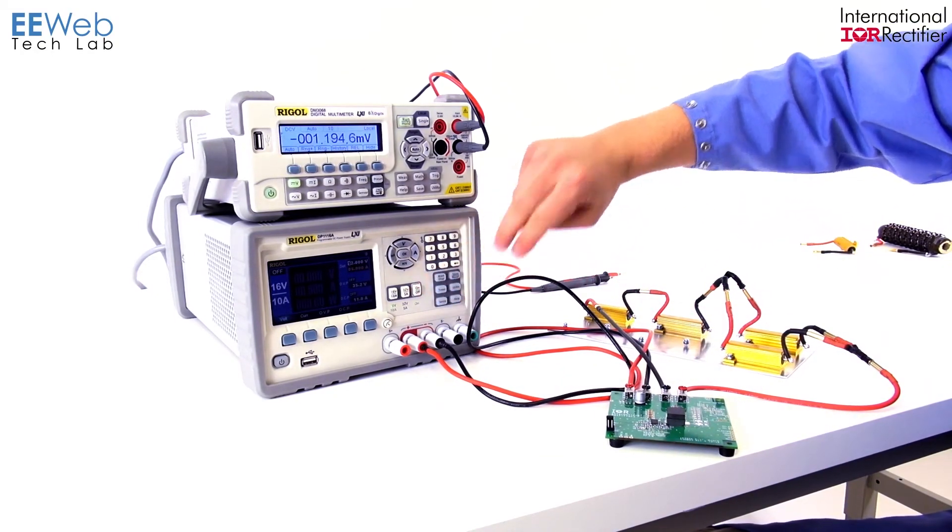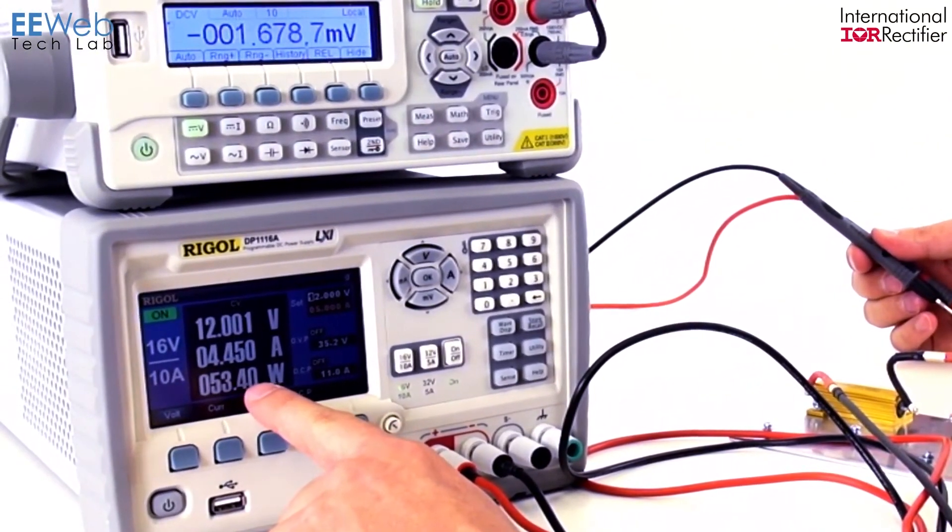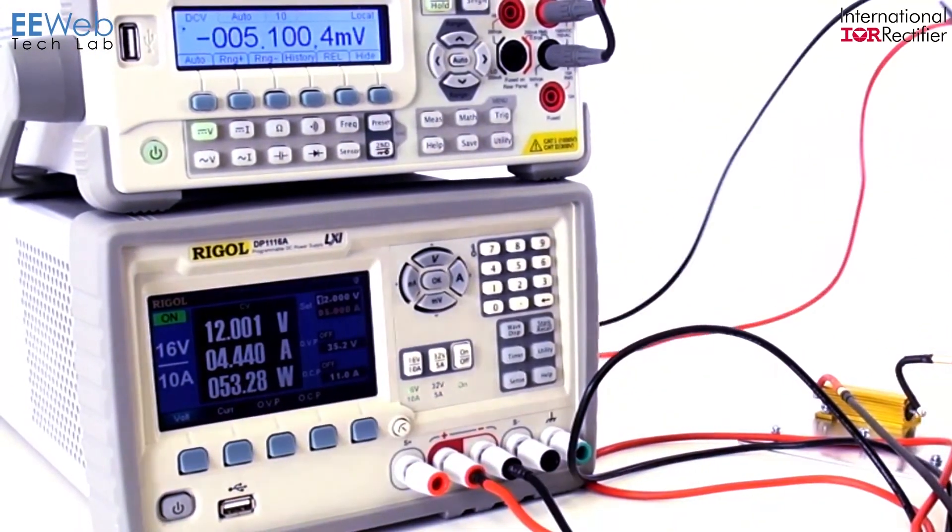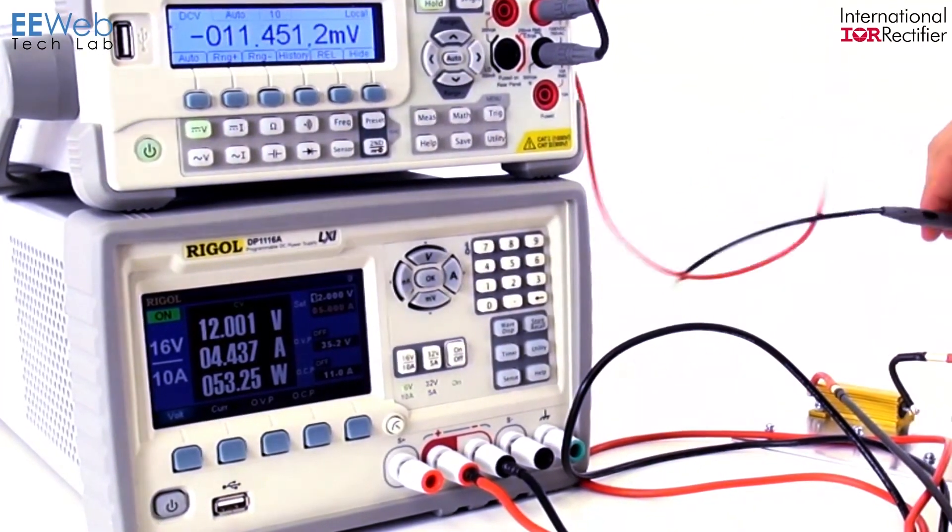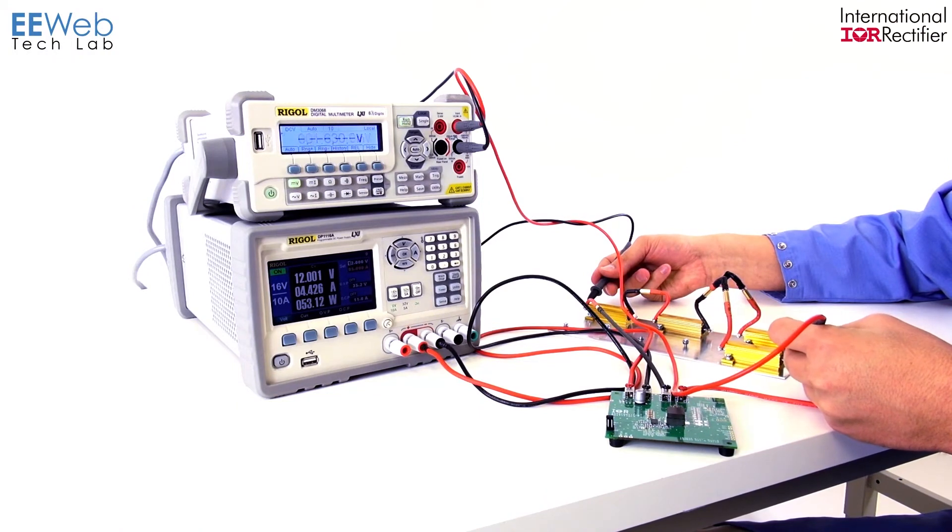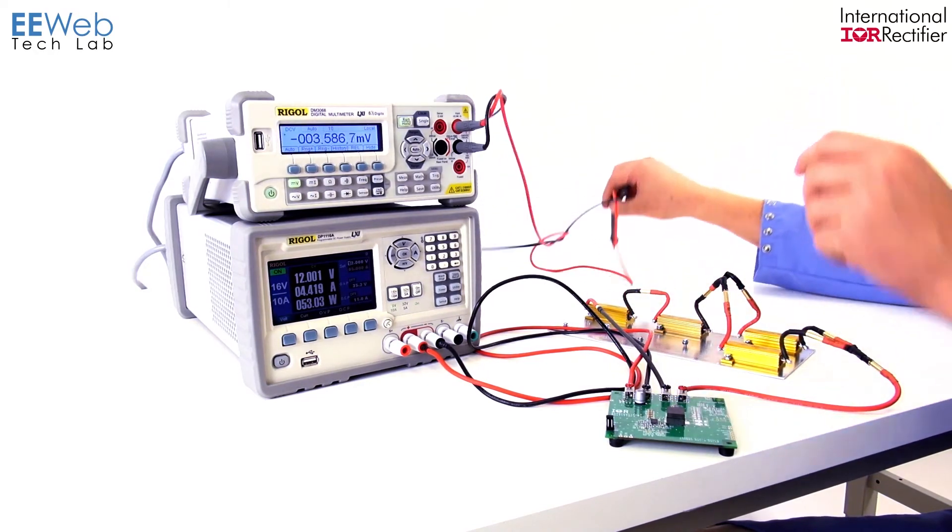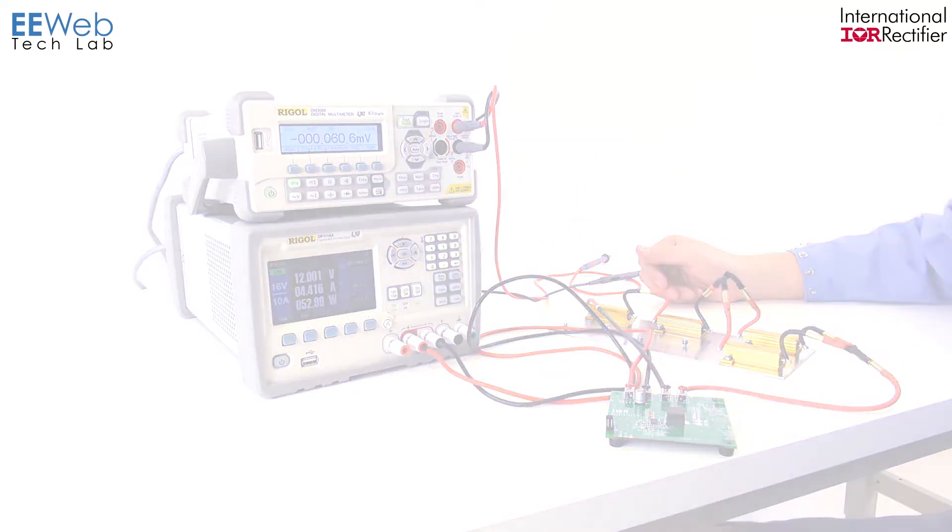Let's turn our output back on, and now you're seeing we're drawing about 54 watts, about four and a half amps. And now we're hitting about 1.25 volts. Have to do some math there, but it's going to be pretty close to 35 amps.